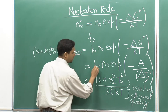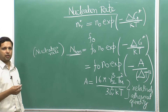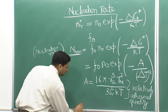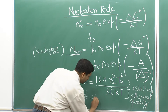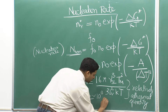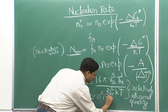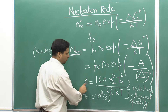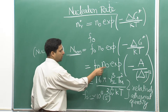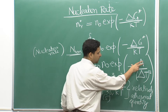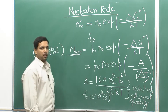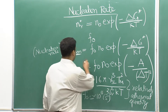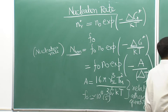F₀ is a complex quantity that depends on many factors. In general, F₀ is found to be of the order of 10¹¹ per second. We will take this as a constant. So you have F₀, n₀, and this exponential term where A is a relatively athermal quantity and ΔT is the amount of undercooling. This is the overall equation for nucleation rate.